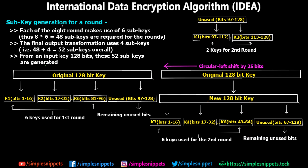Now let's see how we get 52 different sub-keys from the 128-bit original key. In every round we use 6 sub-keys of 16 bits each, so for 8 rounds we need 48 sub-keys. For the final output transformation we use 4 more, giving us 52 total sub-keys. But 52 × 16 = 832 bits, and we only have 128 bits, so we need a process to generate 52 unique sub-keys — this is done through circular bit shifting.